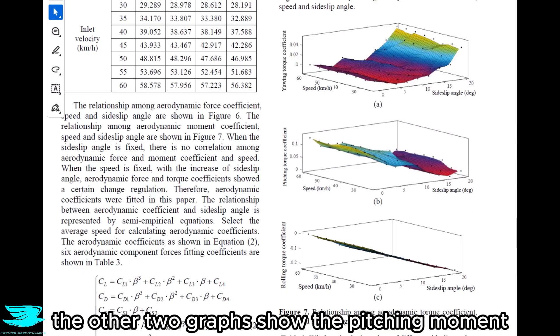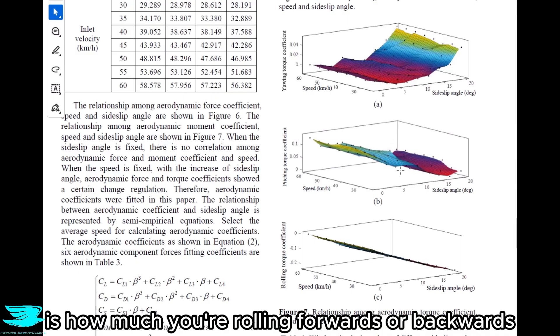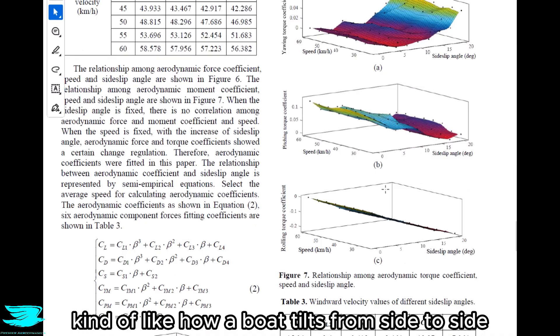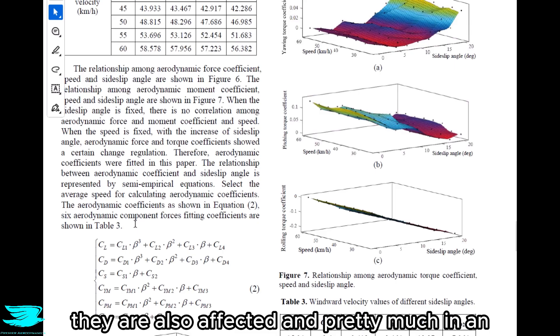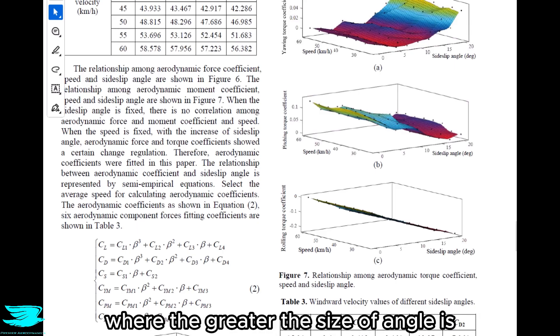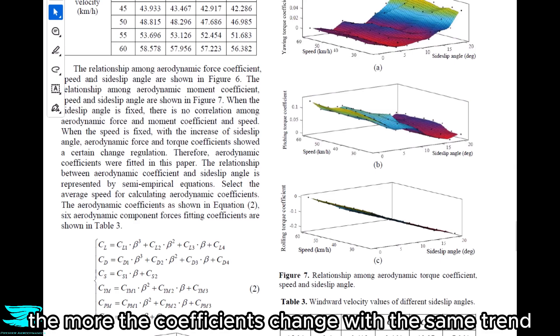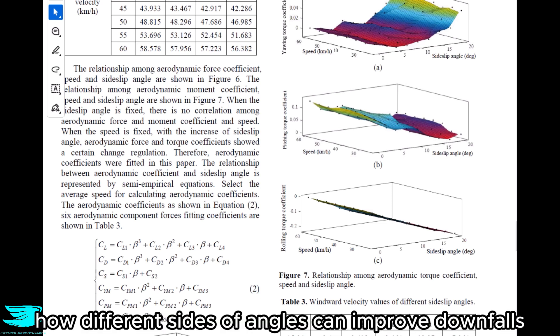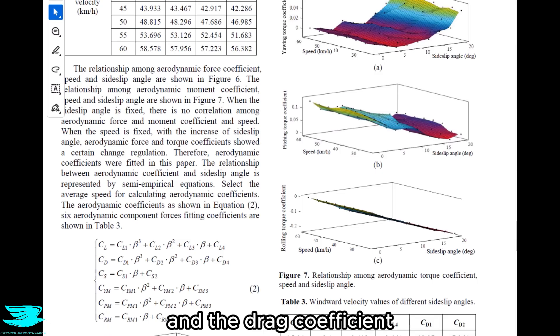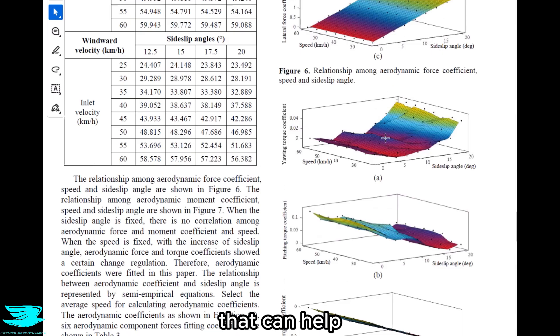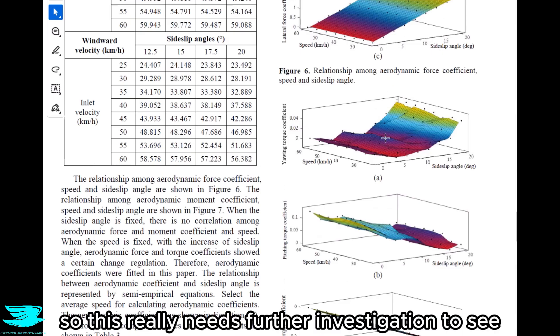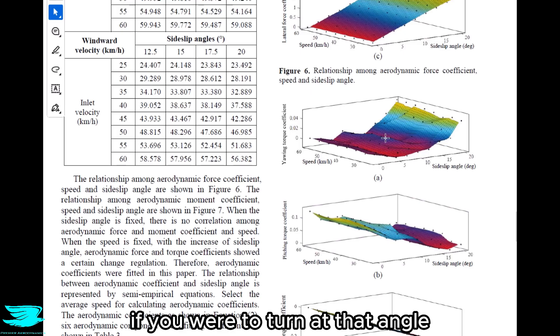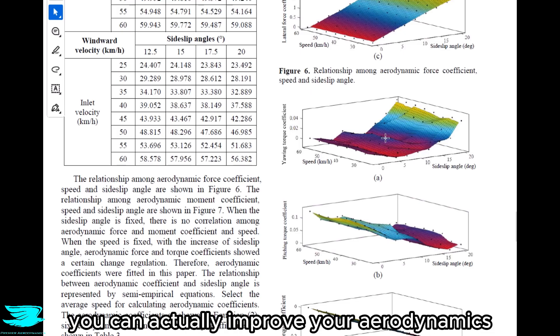The other two graphs show the pitching moment, which is how much you're rolling forwards or backwards, and then the rolling moment coefficient, which is kind of how much you're tilting, kind of like how a boat tilts from side to side as it's on the water. They are also affected and pretty much in a monotonic way where the greater the side-slip angle is, the more the coefficients change with the same trend. So there's nothing really too unexpected here, but I still can't get over how different side-slip angles can improve downforce and the drag coefficient and even the yawing coefficient that can help. So this really needs further investigation to see is this just an anomaly for this car, or if the same thing happens for a range of cars where there's a sweet spot if you were to turn at that angle, you can actually improve your aerodynamics.